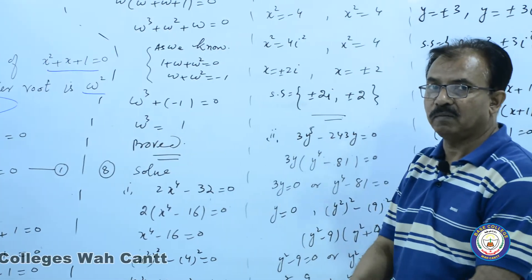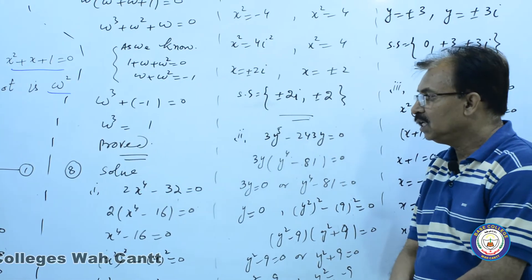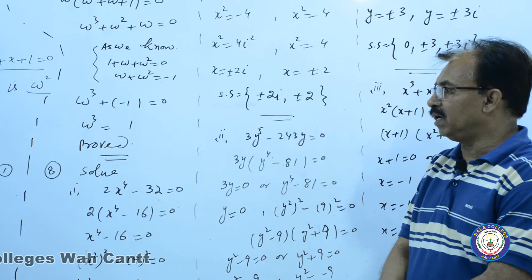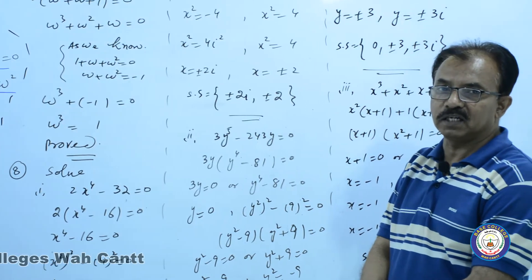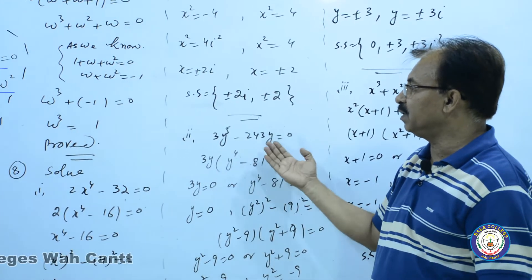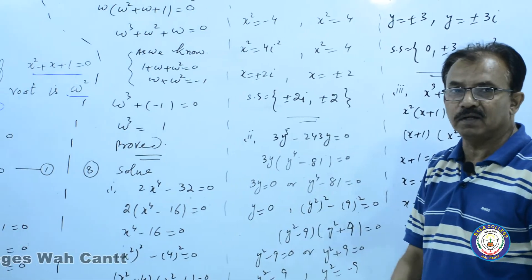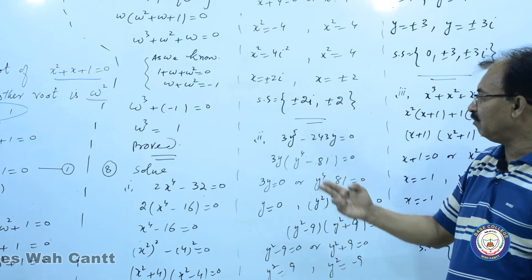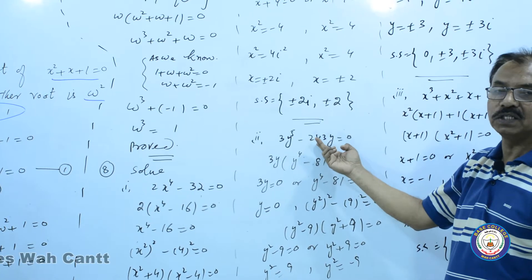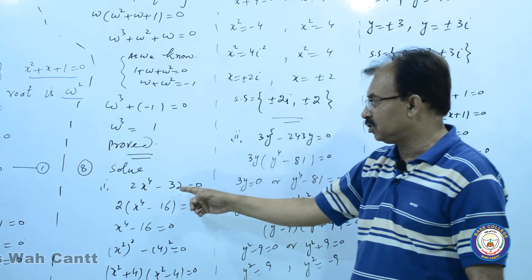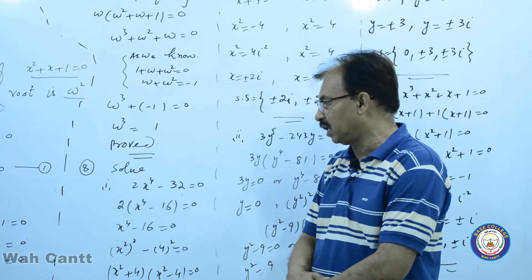تو یہ question ہمارا remaining تھا۔ اس کے بعد question number eight جو ہمارا remaining ہے اس میں four parts ہیں جن میں سے میں نے تین parts attempt کی ہیں، ایک part آپ کے لئے چھوڑ دیا۔ جو part میں نے چھوڑا ہے وہ part number two کی طرح ہے، آپ اس طرح سے کر سکتے ہیں۔